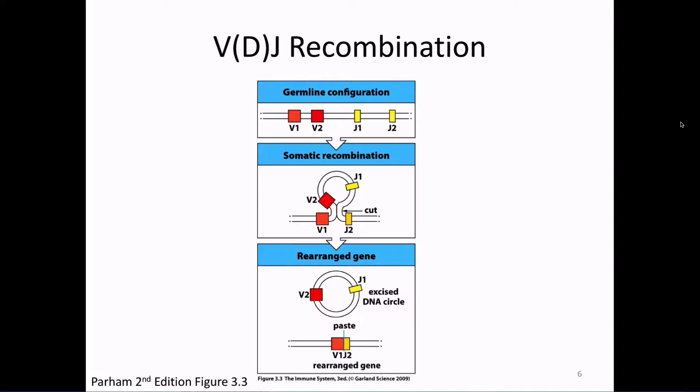I want you to think about this as a dangerous process where what we are trying to do is take V1 and J2, put them next to each other, and cut out the intervening DNA. If you're going to cut and paste DNA at specific sites, what types of things would you need to make that happen?